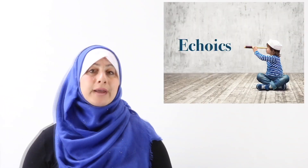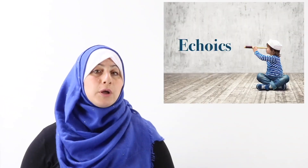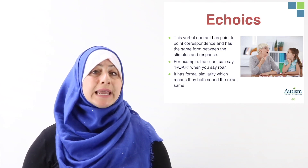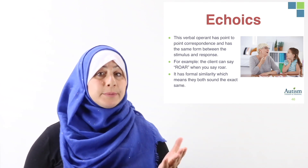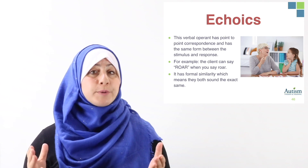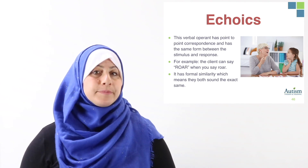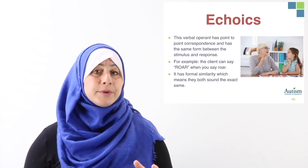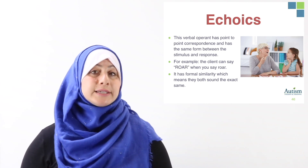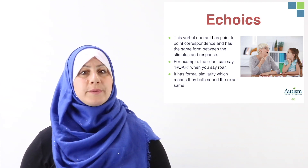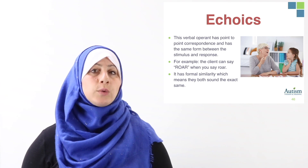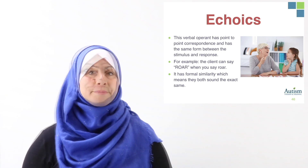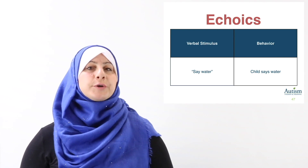Next is the echoic. This verbal operant has point-to-point correspondence and has the same form between the stimulus and response. This is simply matching a verbal stimulus. For example, the client can say roar when you say roar. It has formal similarity, which means that both sound the exact same. It's mimicking a vocal stimulus.